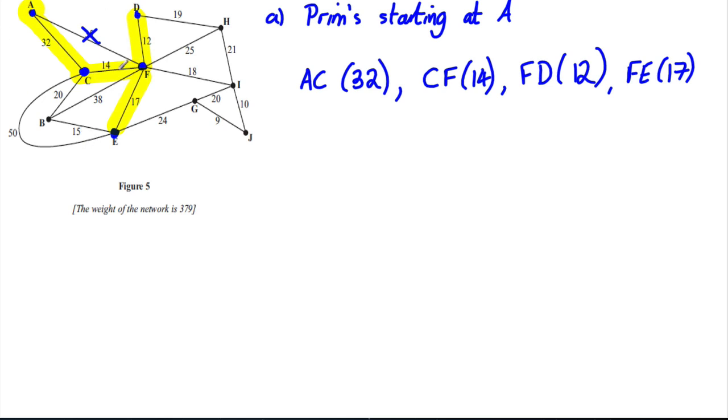And we're going to look around from A, C, F, or D for the smallest. Either the 19, the 25, the 18, the 17, the 38, the 20, the 50. Clearly the 17 is the next one. It's going to take that 17, which is FE. And now we're going to look around here. So the 19, the 25, the 18, the 24, the 50, or the 15. We're going to take the 15 here. So we're going to take EB.